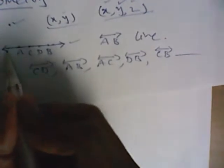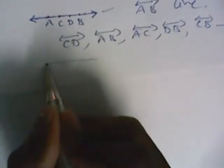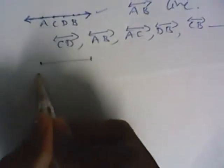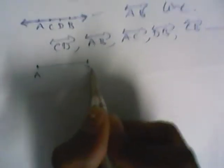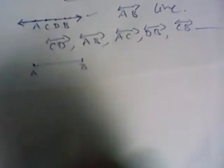If we take other points C and D, we can call this line as CD, AB, AC, BD, or CB. We can call a line by taking any two points on it. The property of a line is that it can be extended in both directions. If the line has certain boundaries, that is nothing but a line segment — it can't be extended. It has a starting point A and an ending point B. A line doesn't have starting and ending points, but a line segment does. It can be denoted as segment AB.